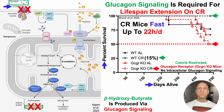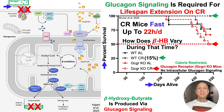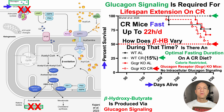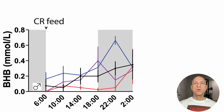Note that calorie-restricted mice are not on a ketogenic diet, which is known to produce beta-hydroxybutyrate by increasing glucagon levels. Calorie-restricted mice in this case are on a standard high-carb diet. In order for calorie-restricted mice to have higher levels of beta-hydroxybutyrate, they fast for up to 22 hours a day, eating the majority of their food within a very short two-hour window. This raises the question: how does beta-hydroxybutyrate vary during that up to 22-hour fast? Let's look at how beta-hydroxybutyrate changes throughout the day, with circulating levels on the y-axis, following mice that had just eaten at 6 in the morning.